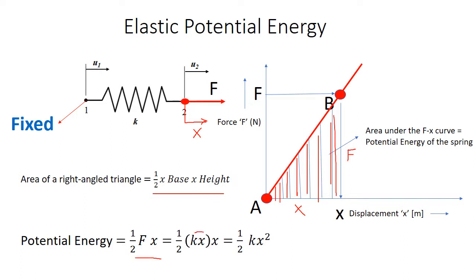We know that F is equal to Kx. Replacing this in the potential energy equation we obtain elastic potential energy of the spring is half times K times x squared.